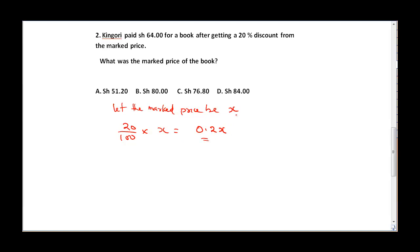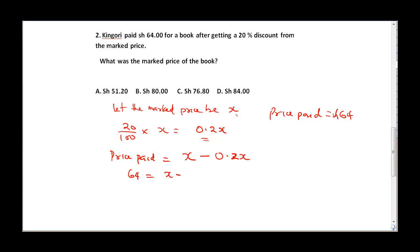Using the formula: price paid equals marked price minus discount, we get 64 equals X minus 0.2X. This simplifies to 64 equals 1 minus 0.2 times X, which gives us 64 equals 0.8X.